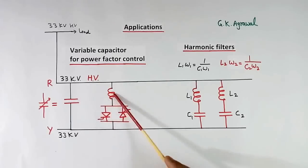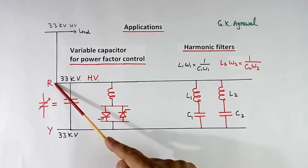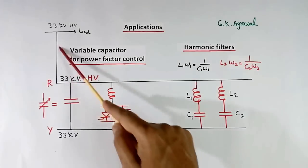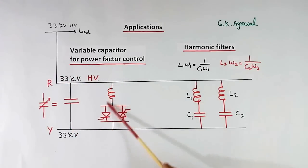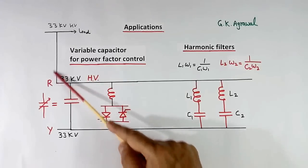Now capacitor and inductor are opposite in nature. So when capacitor current is flowing here and we flow inductive current also, when inductive current is zero, full current will go here.